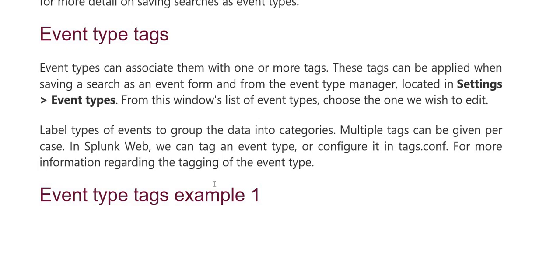Label types of events to group data into categories using multiple tags per case. In Splunk web, you can use the event type configure option in tags configure for more information regarding the tag of the event type.